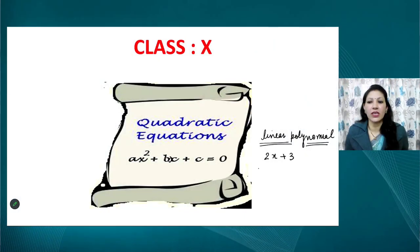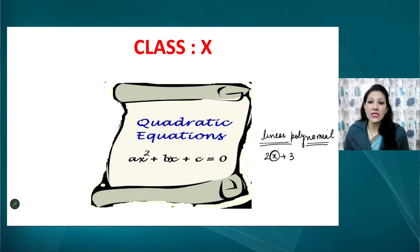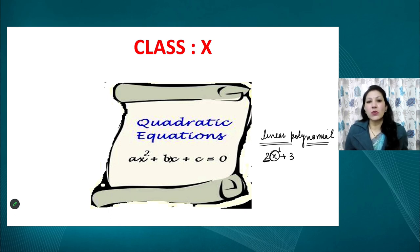A linear polynomial is basically a polynomial where the degree of the variable is always one. For example, the expression 2x + 3 is a linear polynomial because the variable x has no written degree, meaning its degree is one, and the coefficient of x is not zero. So a linear polynomial is defined as ax + b, where a is not equal to zero.